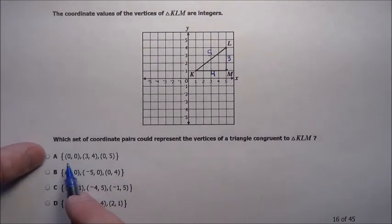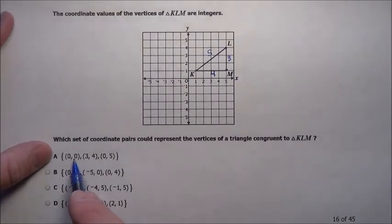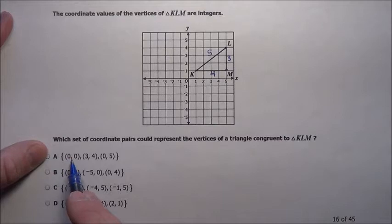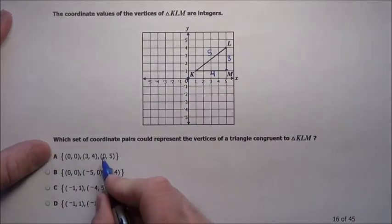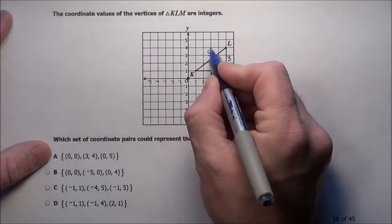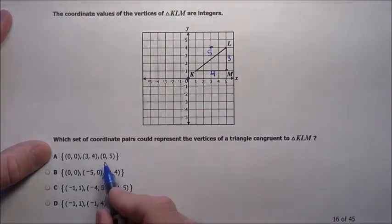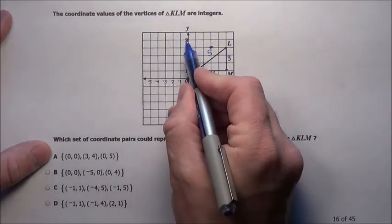Well, you could, if you wanted, you could sit here and we could plot each one of these and try to figure out what it is. Maybe that might help us see this a little bit. Let's see. Let's do A is 0, 0. So it's right here. And it goes to 3, 4, over 3, up 4. And the other guy's at 0, 5.